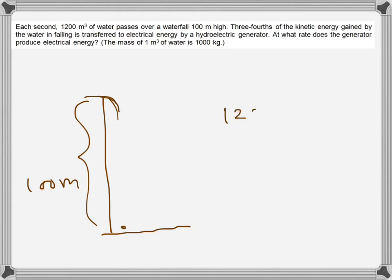That information is given. And then it says that because the water is falling from a high height it gains some kinetic energy, and three-fourth of that kinetic energy is converted into electrical energy using a hydroelectric generator. So we need to find at what rate the electrical energy is produced.